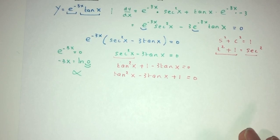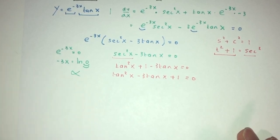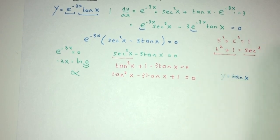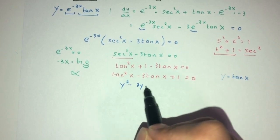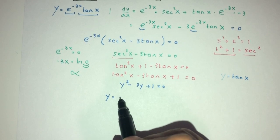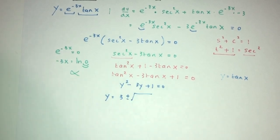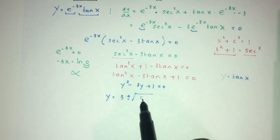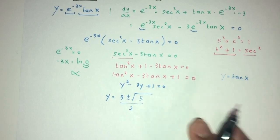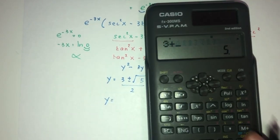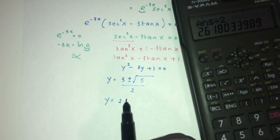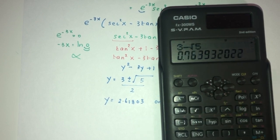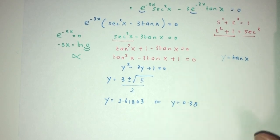We have to solve this equation for the value of x. This is in terms of tan x. Let y equal to tan x. You will have y squared minus 3y plus 1 equals 0. To find y, using the quadratic formula: that would be 3 plus or minus root of 9 minus 4 times 1 times 1, divided by 2. The discriminant is root 5. So y equals 3 plus root 5 over 2, which is 2.61803, or y equals 3 minus root 5 over 2, which is 0.382.